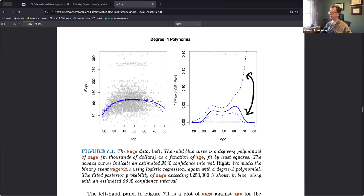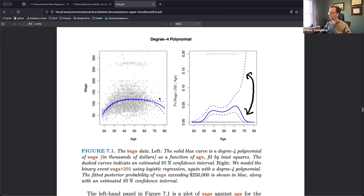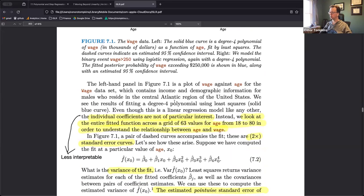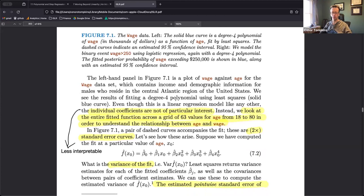This shows that at the end of the range of age, that polynomial creates some very wide confidence intervals. This is where we're getting a little away from the interpretability of the basic linear model. Once you start doing these polynomials or splines, the individual coefficients of the variables are not as helpful.